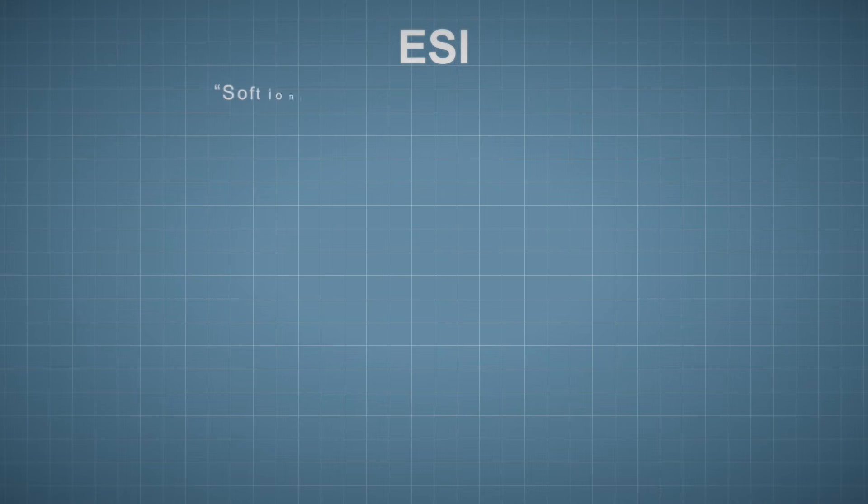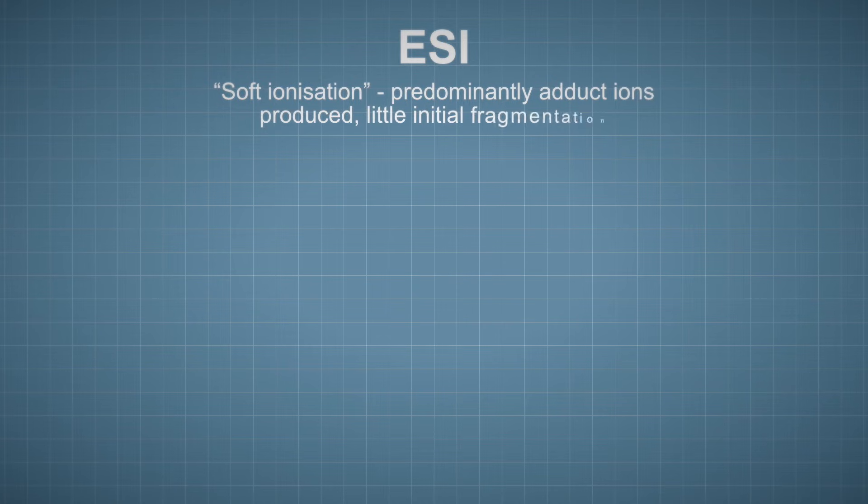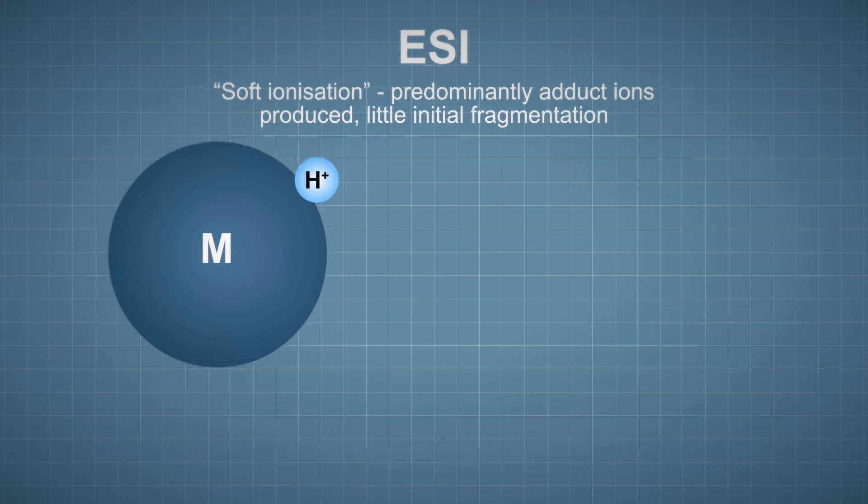In ESI to form positive ions, cations, for example hydrogen ions often just called protons, interact with the analyte molecules and form new bonds between the cations and the analyte molecules. This produces adduct ions, also sometimes called cationized molecules, with a total mass equal to the mass of the analyte molecule plus the mass of the cation.